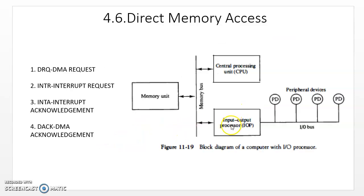The other method is burst transfer. Burst transfer is needed when the data requested by the peripheral device is a huge memory block. Such huge memory blocks of data cannot be transferred using the cycle stealing method. During that time, the CPU will not be executing any instruction — it will stay idle and give control over the data bus, address bus, and control bus to the input/output processor, so that it can monitor the data transfer between the memory unit and the requesting peripheral device.